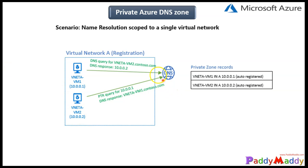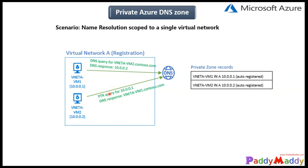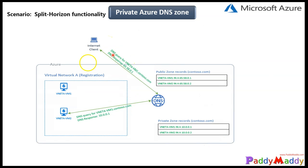You can link virtual networks to your private DNS zones — this is the link concept we'll discuss. There's also something called auto-registration: when enabled, the DNS zone will have automated records, meaning an A record gets created automatically within the DNS zone. We'll have a look at this in the upcoming demo. An important point: records contained in a private DNS zone are not resolvable from the internet because it's private. Let's jump into the portal to see how to create this and explore different scenarios.